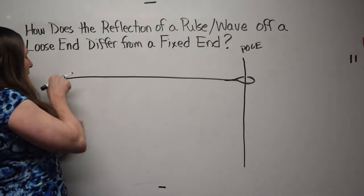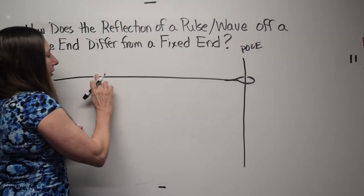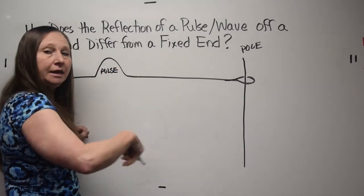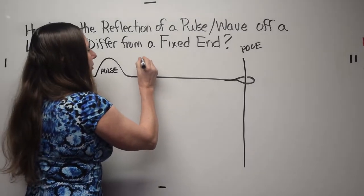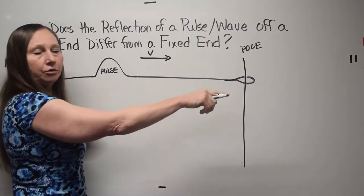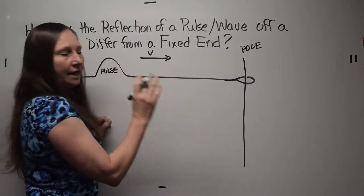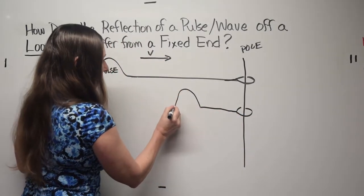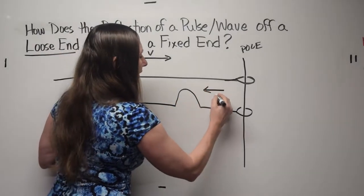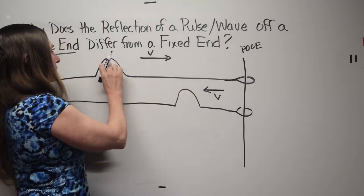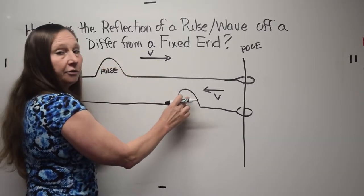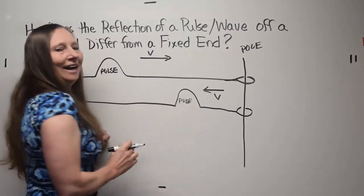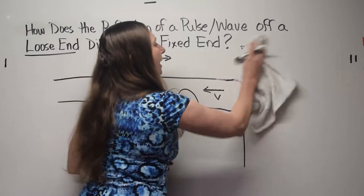Now I'm going to take this piece of string and flick it to generate a pulse — just a single pulse. You know that a wave would be made up of many repetitive pulses; this is a single pulse. The pulse is traveling to the right. When the end is loose, the pulse will reflect and come back in the opposite direction. The initial pulse is on top, and the pulse after reflection is also on top. That's what happens when a pulse is reflected off a loose end.